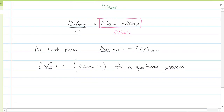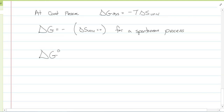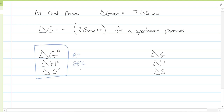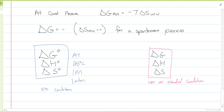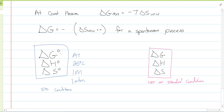We have ΔG and ΔG° here — I want to point something out. ΔG° and ΔG relate the same way as ΔH° and ΔH, and ΔS° and ΔS. The ones with the degree symbol are at 25°C, 1 molar, 1 atmosphere — standard conditions. The ones without the degree symbol are not at standard conditions. It could be 22°C, 0.8 atmospheres, 1.2 atmospheres, 0.1 molar — whatever it happens to be. They're still the same concept; the degree sign just means standard conditions.